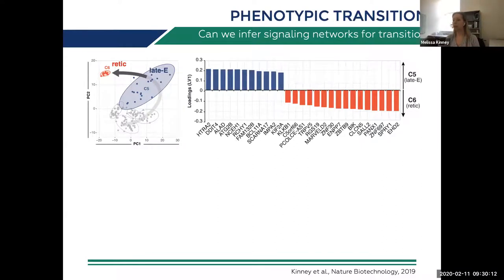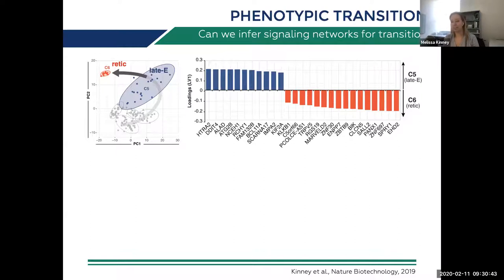We used a regression-based algorithm — the LASSO, or least absolute shrinkage and selection operator — to pull out a group of genes that most separates the two clusters from one another. This gave us 27 genes: some correlated with the late erythroblast stage, some with reticulocytes. But this popped us back out of the network context, making it really hard to understand cohesively what all these genes do together.